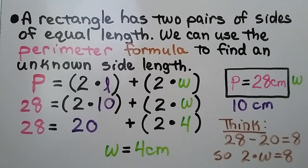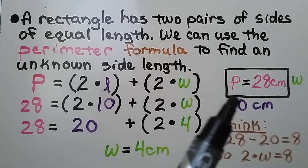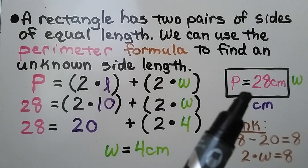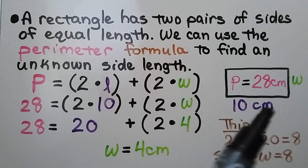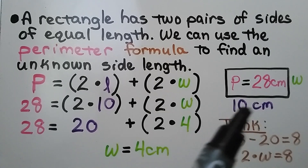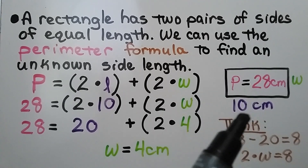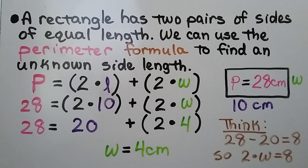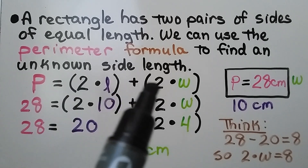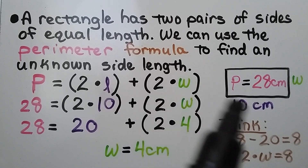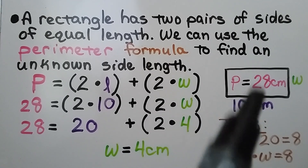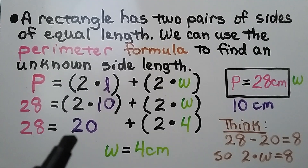A rectangle has two pairs of sides of equal length. We can use the perimeter formula to find an unknown side length. Here we have the perimeter given as 28 centimeters. We see the side length here is 10 centimeters, which means the opposite side must also be 10 centimeters. We don't know what the width w is. With the formula, perimeter equals 2 times the length plus 2 times the width, we know that's 2 times 10, which is 20.